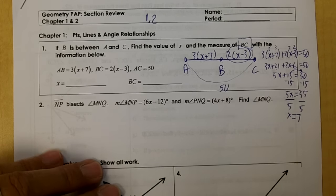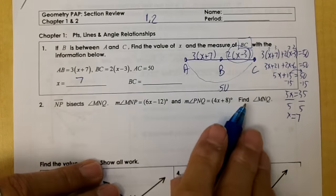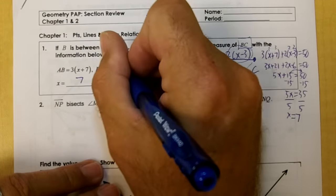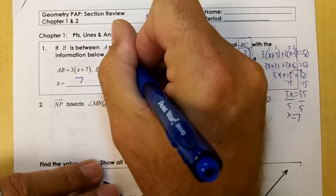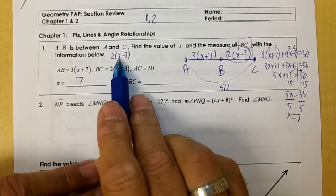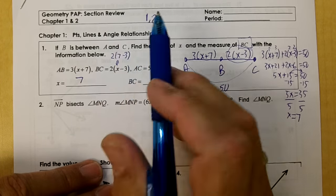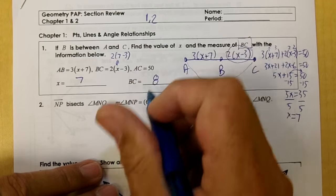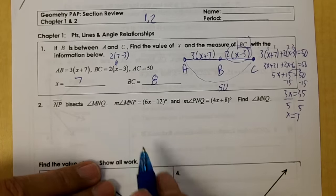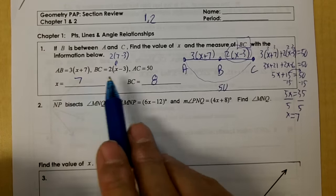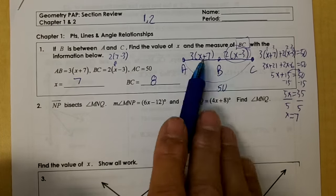Now we're going to take X equals 7 and plug it in. So we would have 2(7-3). 7 minus 3 is 4, and 4 times 2 is 8. So BC is equal to 8, and that's the answer for number 1. X is 7, BC is 8. Make sure you draw a picture.